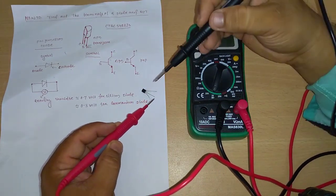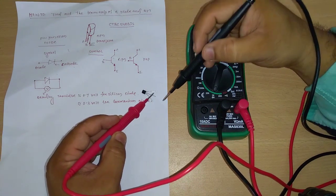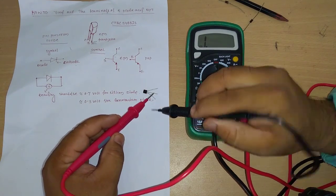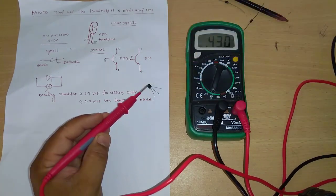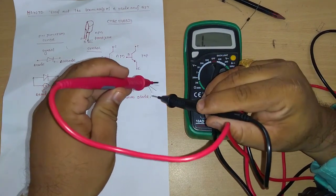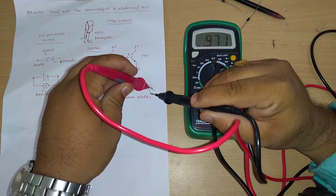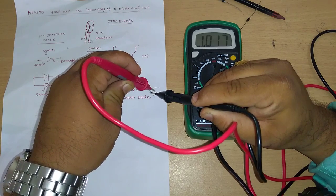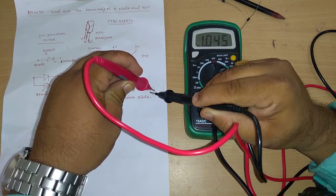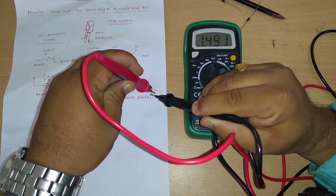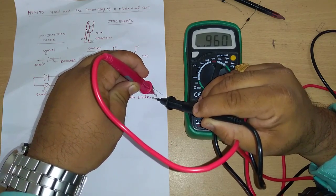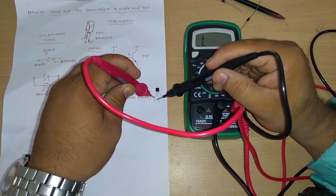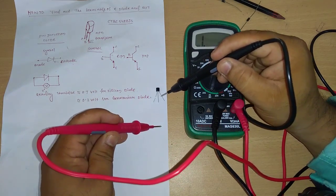So the base-to-emitter voltage should also be 0.7 volts. It is coming more than one... so there is a barrier potential between the PN junction and we are getting some voltage — nearly 0.7 volts. But in the reverse way we may not get it. So here is the emitter, here is the base, and here is the collector.